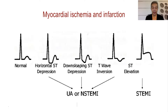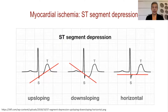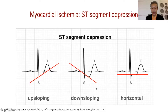The ST segment, from the end of the QRS to the beginning of the T-wave, could be described as elevation of at least one millimeter or depression of one millimeter. The types of ST segment depression include up-sloping, which is a normal variant unless prolonged; down-sloping, which is already ischemia; or horizontal, more than one millimeter, which is again ischemia.